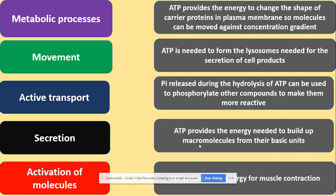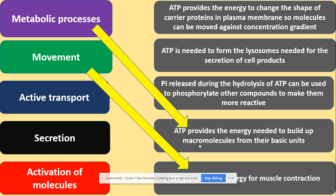Here are examples of how ATP is used in cells. In metabolic processes, ATP provides the energy needed to build up macromolecules from basic units. For movement, we need energy for muscle contraction. In active transport, ATP provides the energy to change the shape of carrier proteins in the plasma membrane so that molecules can be moved against the concentration gradient — note that this applies to carrier proteins only, not channel proteins.